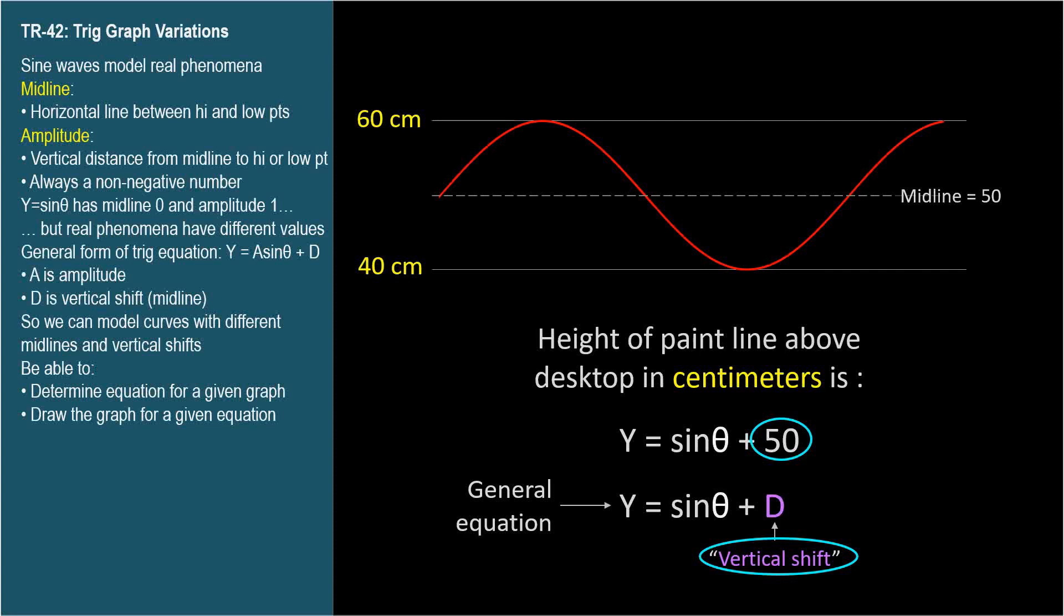Well, our equation still doesn't describe the paint line very well, because y equals sine theta plus 50 has a highest point of 51 when sine theta equals 1, and a lowest point of 49 when sine theta equals negative 1.